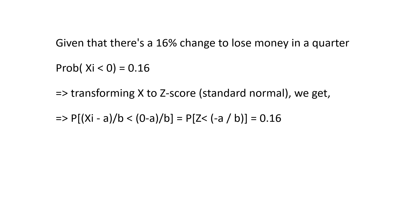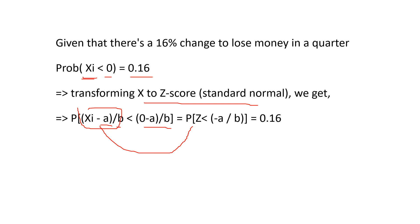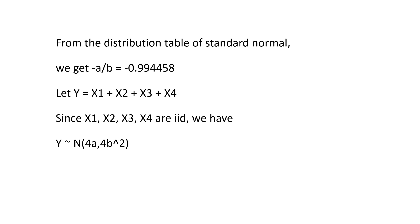We are given that there is a 16% chance to lose money in a quarter, so the probability of Xi being less than 0 is equal to 0.16. Xi is our return in quarter i, and negative returns means we are losing money. We can transform these variables into Z-scores by subtracting the mean and dividing by the standard deviation on both sides of the inequality. Taking that part as Z, the right side becomes: the probability that Z is less than minus A over B equals 0.16. From a standard normal table, we find that minus A over B equals minus 0.99.